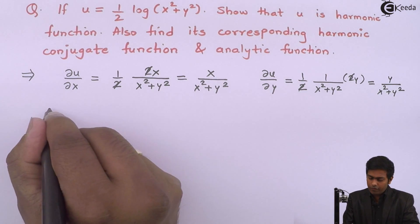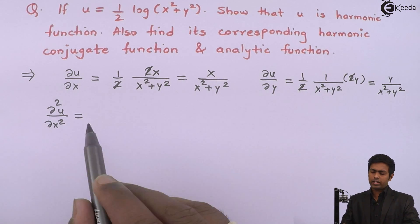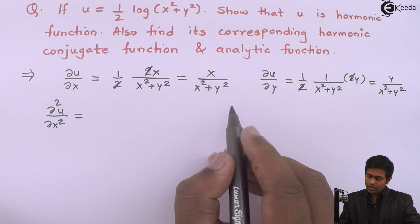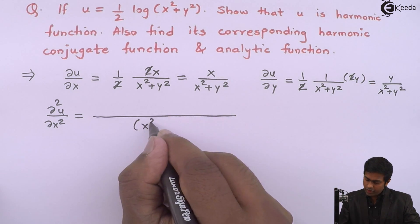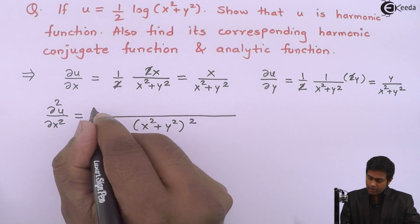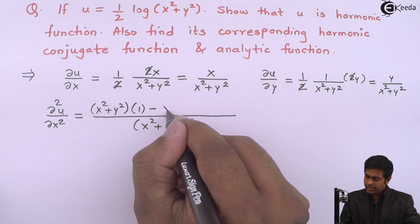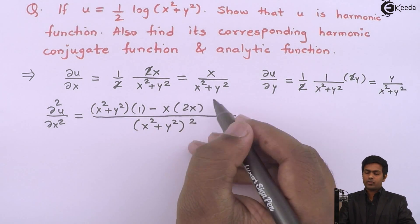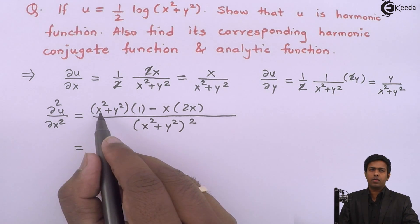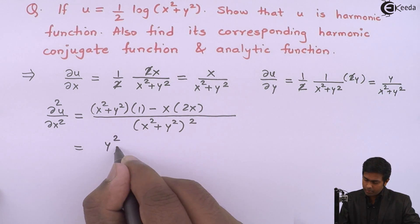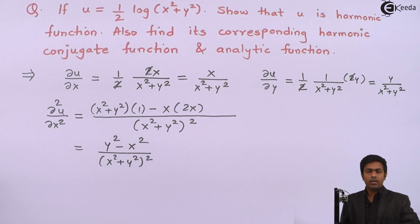Next, the value of ∂²u/∂x² — we differentiate x/(x² + y²) with respect to x again. By the u/v rule, the denominator is (x² + y²)², the numerator is (x² + y²)·1 minus x·2x, giving us (y² − x²) in the numerator and (x² + y²)² in the denominator.